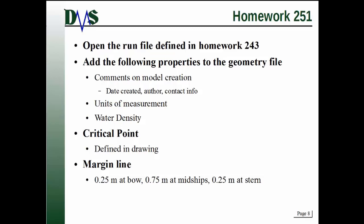Okay, homework number 251. What I would like you to do is open up the run file for the homework that you defined in homework 243. If you haven't really gotten that completed, don't worry. Homework 251 has a starting point, a starting run file that you can work with. And I'd like you to add the following properties to that geometry file. First off, add some comments on the model creation. You add the date it was created, who the author was, the contact information. Then you're going to add the units of measurement and the water density. And define a few critical points. Those are actually listed in the drawing, so it can tell you what the points are. You have to define them in GHS. And then finally, I'd like you to put in a margin line. And that margin line is going to be 0.25 meters at the bow, 0.75 meters at the midships, and 0.25 meters at the stern. So that's a parabolic margin line.